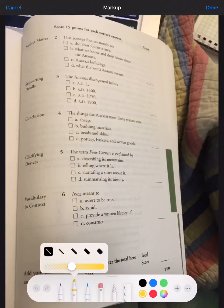This passage mostly focuses on A, the Four Corners area, B, what we know and don't know about the Anasazi, C, Anasazi buildings, or D, what the word Anasazi means.